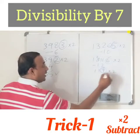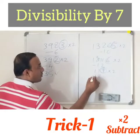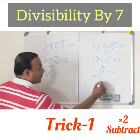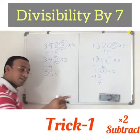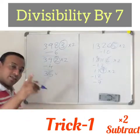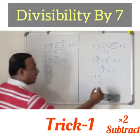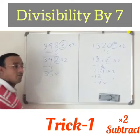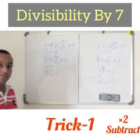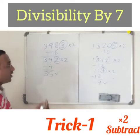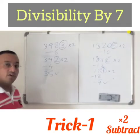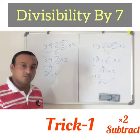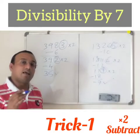Take the last digit 9, multiply by 2 to get 18, that is separate from the remaining digits. What do we get? Minus 7. Is minus 7 divisible by 7? Yes, it is divisible by 7. Therefore, 13265 is divisible by 7. In this way, trick 1 is useful for us to check whether the given number is divisible by 7 or not.